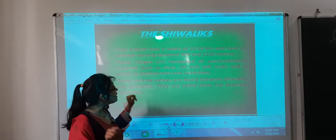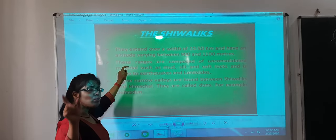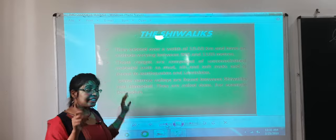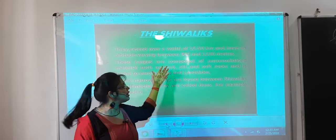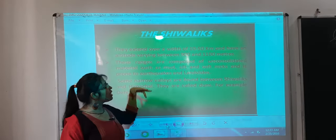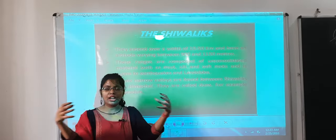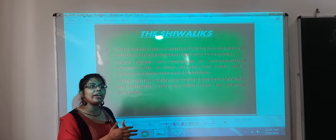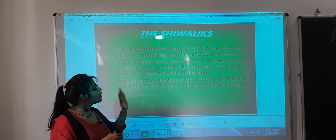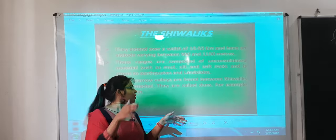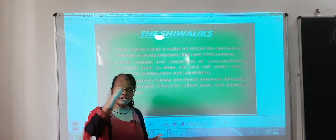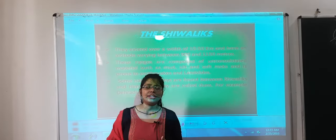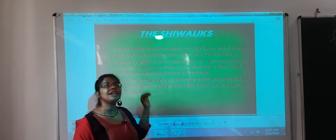The last longitudinal extent is the Shivalik or outer Himalayas. Their width extends over 10 to 50 kilometers, and their height varies from 900 to 1,100 meters. These ranges are composed of unconsolidated material such as mud, silt, and soft rocks, and are prone to earthquakes and landslides. Some narrow valleys are found between the Shivaliks and Himachal — these are called duns. For example, Dehradun is found in the Shivalik range.